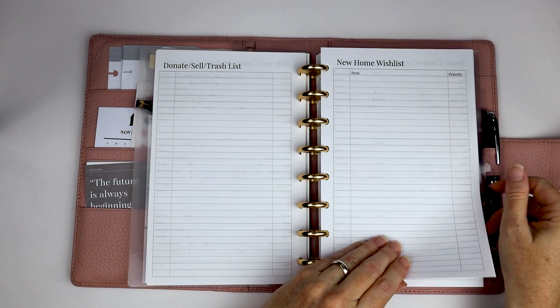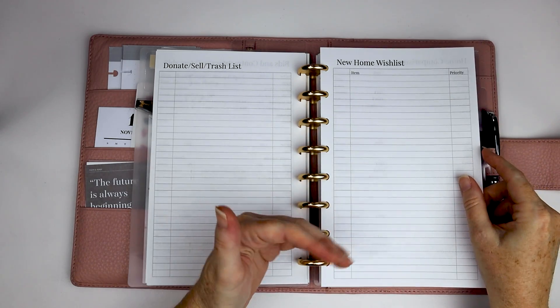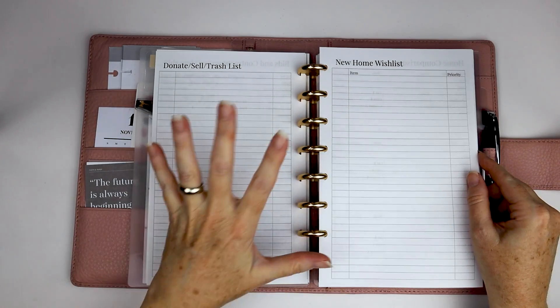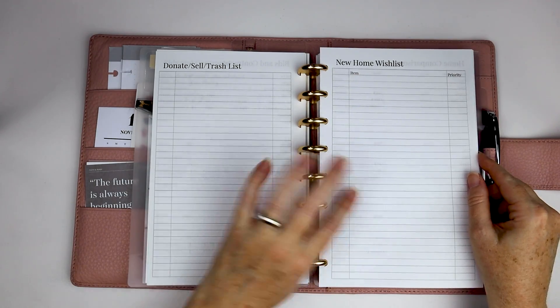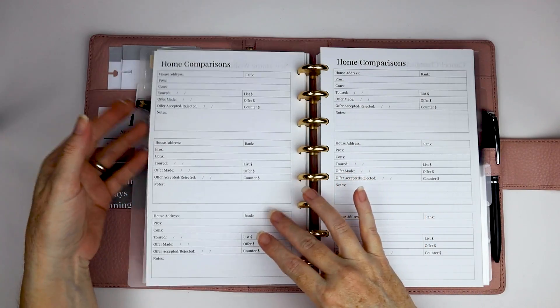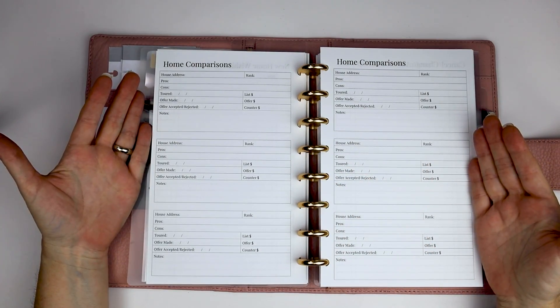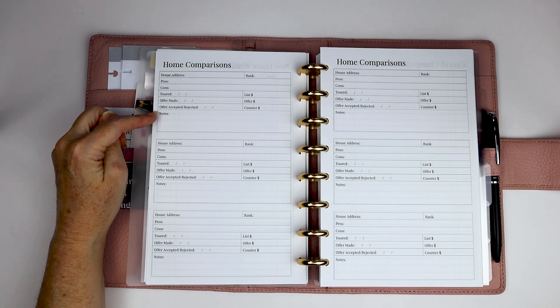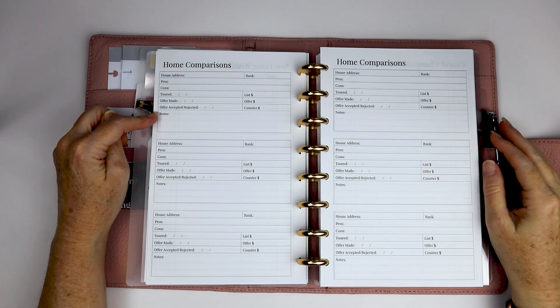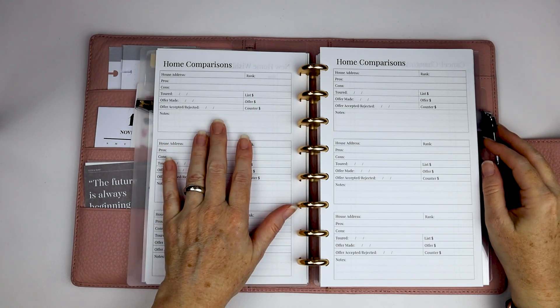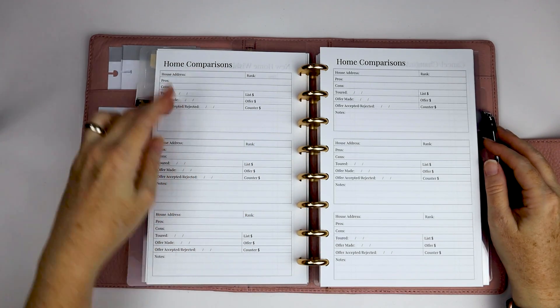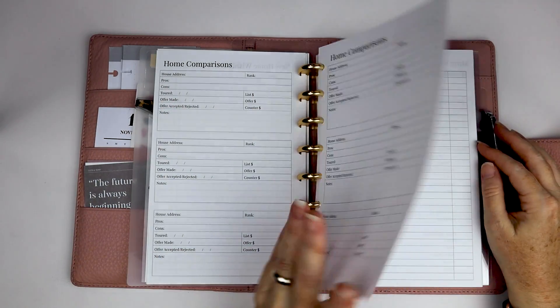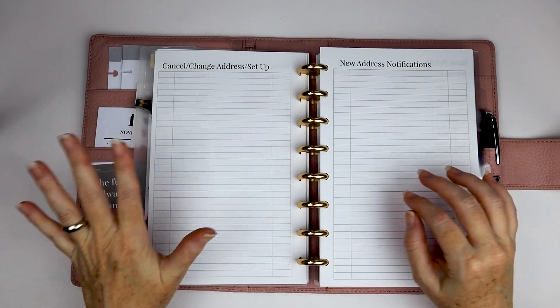New home wish list. So when you're looking for your new home, you have a place to kind of list and prioritize the things that are important to you. I do have a version of this for people who rent. So there's a version of this for apartments as well. There's two pages of home comparisons. So you can have a spot for your address, pros, cons, when you toured it, if you made an offer, whether it was accepted or rejected, you know, spot for putting the dollar amounts there, notes. You can rank them. So if you've narrowed it down to your top three or whatever, you can kind of put that information in there.